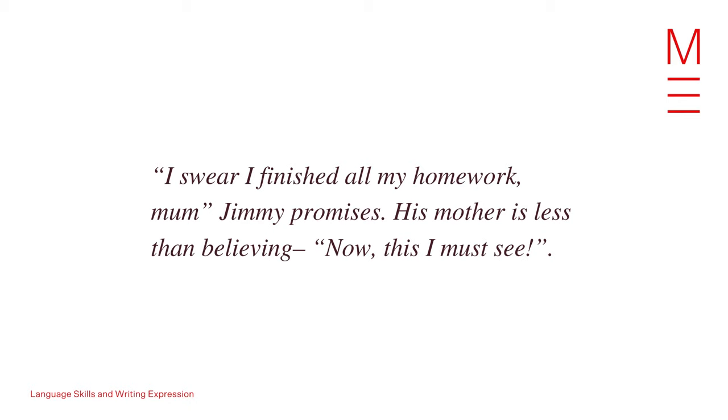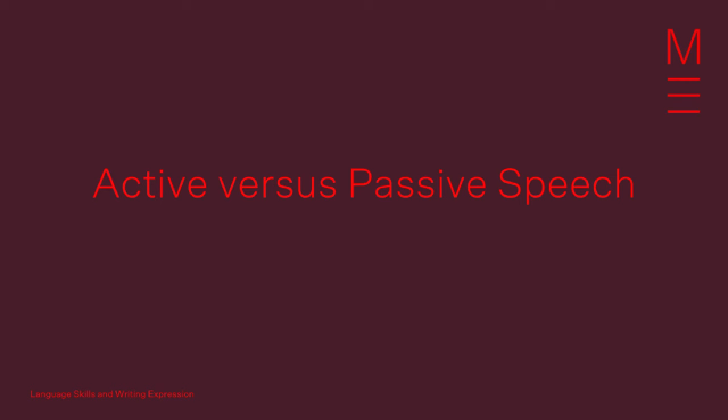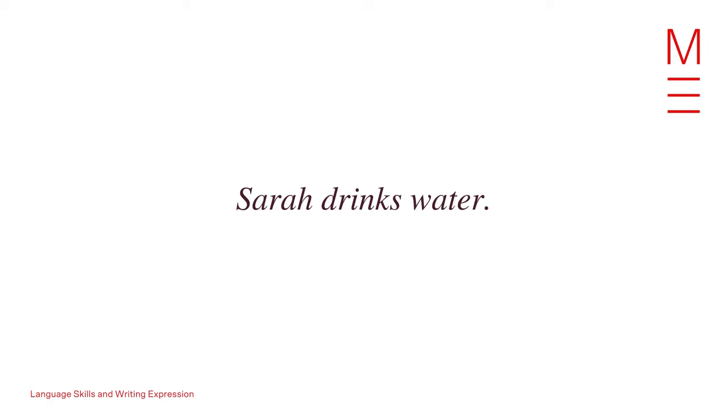Active versus passive speech: if you're a student who wants to be more intentional about your written expression, first ask yourself: have I ever thought about my use of active versus passive voice? The most basic sentence structure requires two things: a subject and a predicate. A subject is the person or thing acting in a sentence; the predicate tells us what the subject is doing. The absolute most basic sentence can be 'Sarah drinks.' If we complicate that to 'Sarah drinks water,' we have Sarah as the subject, 'drinks' as the verb, and 'water' as the object. The sentence 'Sarah drinks water' is in the active construction — clear, straightforward and to the point.